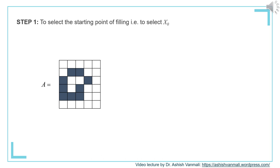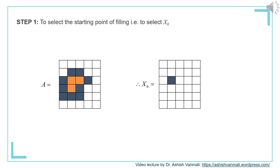Let's select the starting point X_0 for the region filling algorithm. The region of A to be filled is marked with orange color. The X_0 has to be one of the pixels from these orange patches — you can select any one. The number of iterations will depend on how you select this starting point. For this example, let's select the first corner point, which will become our starting point X_0.